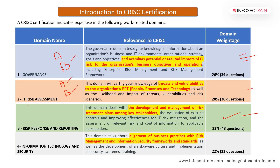Domain three is divided into three parts: Part A is IT Risk Response, Part B is IT Control Design and Implementation, and Part C is Risk Monitoring and Reporting. Domain four is divided into Part A — Information Technology Principles — and Part B — Information Security Principles. This covers all the different domains in the CRISC certification.